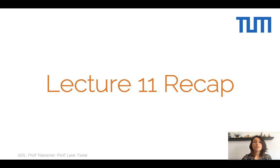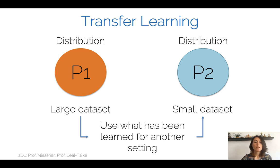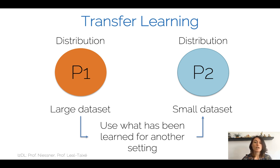Hello everyone, welcome to lecture 12 of I2DL. Let's start with a lecture 11 recap. In lecture 11, we started discussing transfer learning. Imagine you have a very large dataset with annotations where you can train your neural network on, for example ImageNet. You're actually interested in another task, for which you have a small dataset with a small number of annotations. The question is, can you leverage the information learned from task 1, from the large dataset, and use it for task 2? This is what transfer learning is.